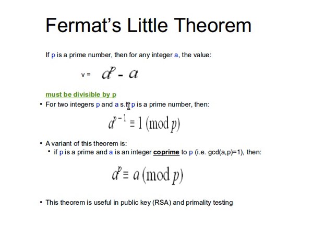In other words, for two integers P and A such that P is a prime number, A to the power P minus 1 is congruent to 1 modulus P. A variant of this theorem says that if P is a prime number and A is an integer coprime to P — i.e., the GCD of A and P equals 1 — then A to the power P is congruent to A modulus P.